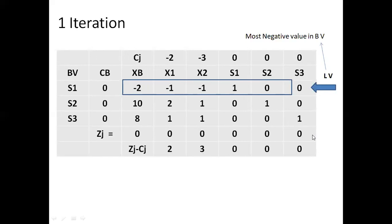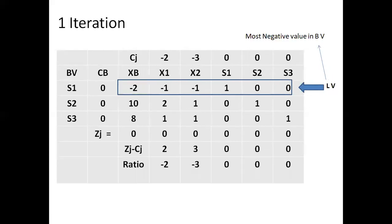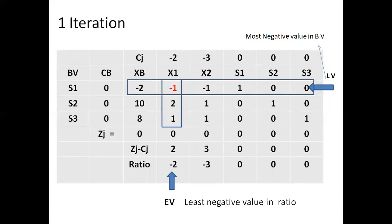The ratios are: 2 divided by minus 1 equals minus 2; 3 divided by minus 1 equals minus 3; 0 divided by 1 equals 0; 0 divided by 0; 0 divided by 0. So the ratios are minus 2, minus 3, 0, 0, 0. The entering variable is chosen as the one with the least negative value in the ratio, which is minus 2, so x1 is the entering variable.